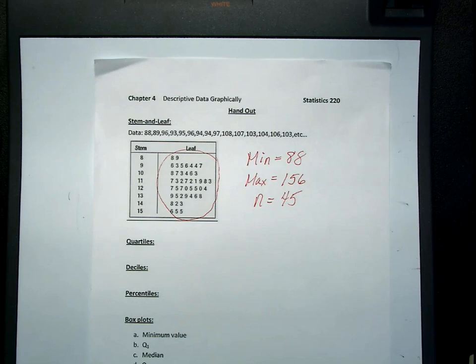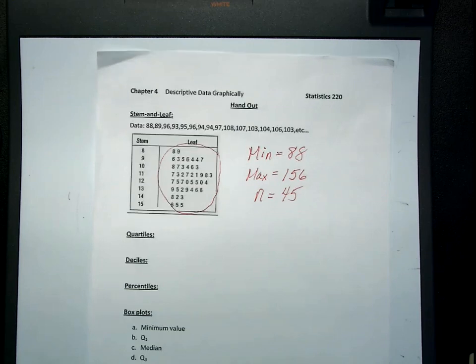So the stem and leaf plot has all the advantages of the histogram. In addition, you don't lose what the actual data points are. The next topic I'd like to go over in Chapter 4 is your quartiles. I'm going to put a blank piece of paper because I'm going to give you an example that you do not have. I recommend, before you review this video, to go through my PowerPoints and understand quartiles and percentiles a little bit. But I'm going to give you seven data points.